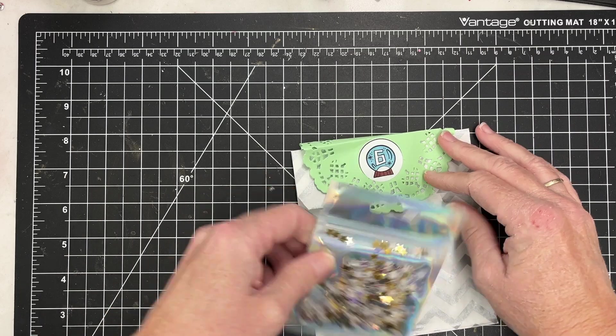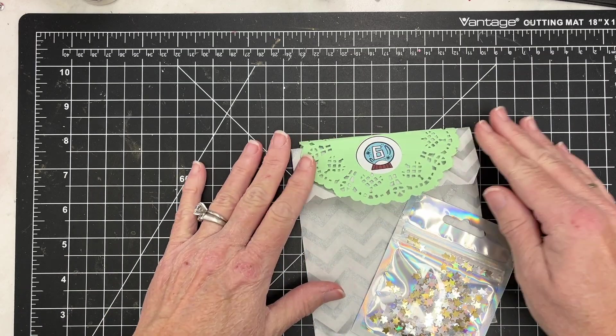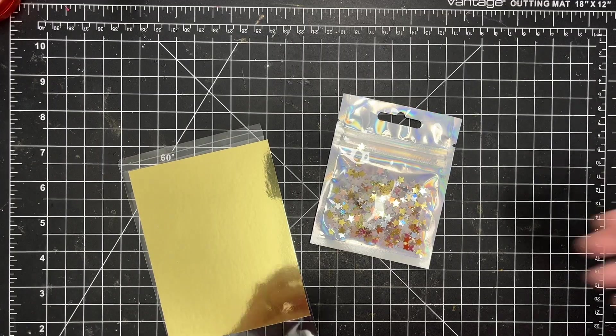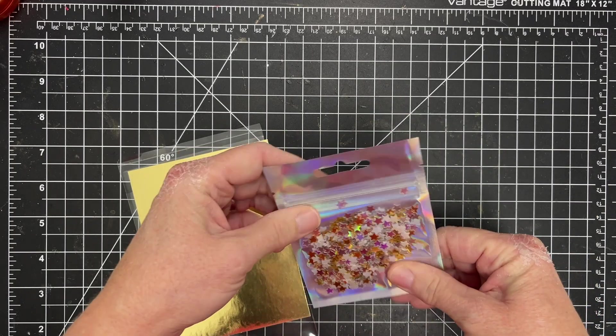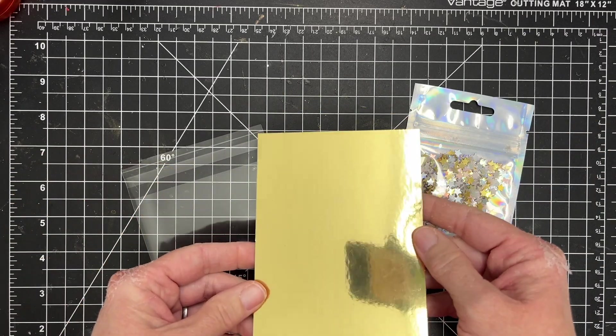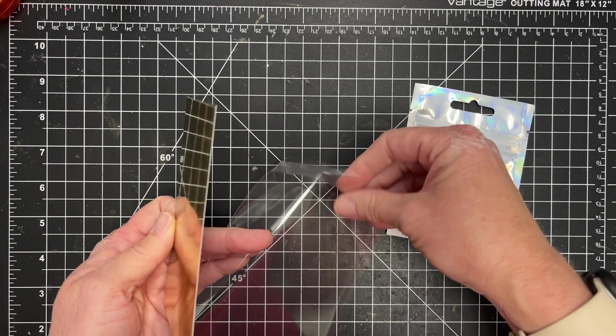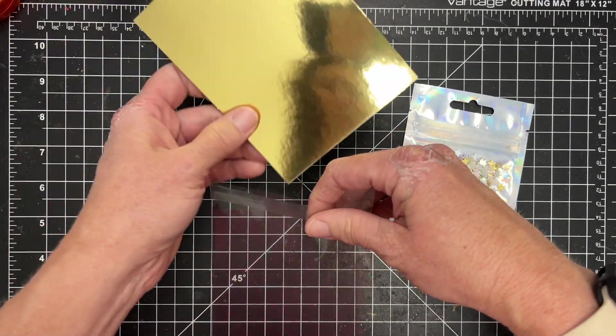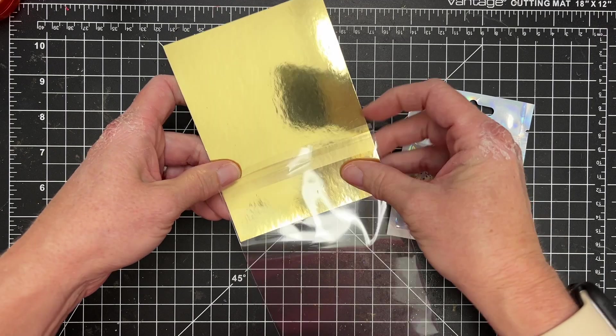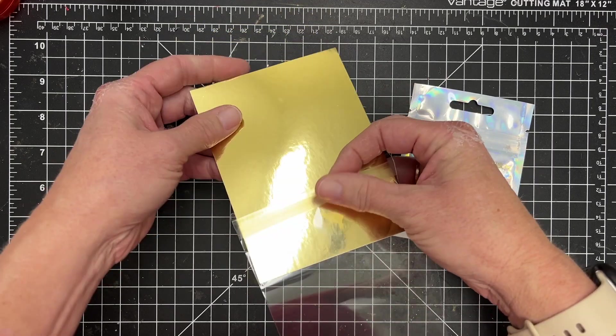So I am going to make a super quick shaker card. I cut a piece of gold cardstock to a little less than four by five and a quarter, and this fits perfectly in these little pouches. These little envelopes are from Stamps of Life. I've linked them in the description.